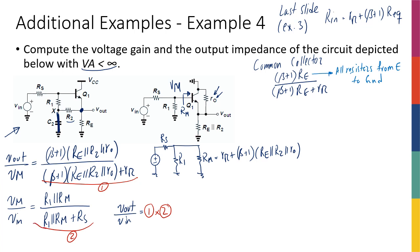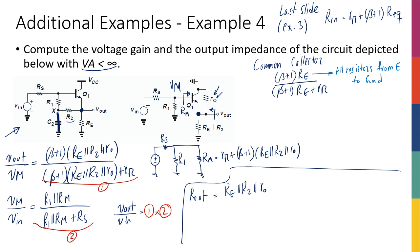The other question is: what is the output impedance? Looking from the output to ground, R_out is, on one hand, Re in parallel with R2 in parallel with R_naught. On the other hand, that's in parallel with what I see looking up into the emitter of Q1, which is 1/G_m1 plus whatever is in the base divided by (beta + 1). For R_out calculations, V_in is shorted to ground, so Rs and R1 are in parallel. Therefore R_out equals (Re || R2 || R_naught) || (1/G_m + (R1 || Rs) / (beta + 1)).